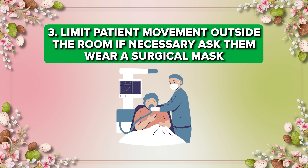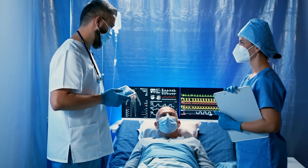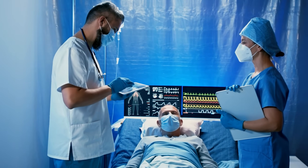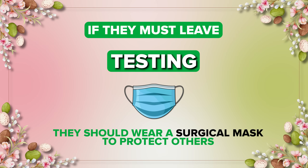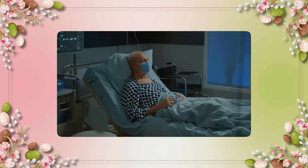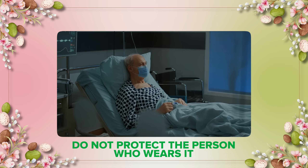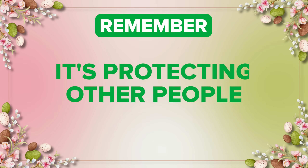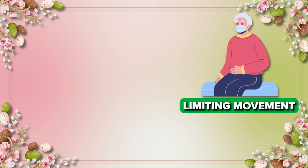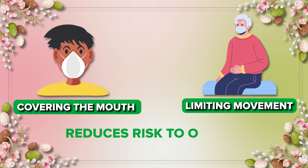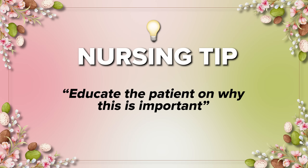Number three: limit patient movement outside the room. If necessary, ask them to wear a surgical mask. Patients with active TB should stay in their negative pressure room as much as possible. If they must leave for testing, they should wear a surgical mask to protect others. Surgical masks do not protect the person who wears it — they protect other people. Because TB spreads through airborne droplets, limiting movement and covering the mouth reduce risk to others. Always educate the patient on why this is important.